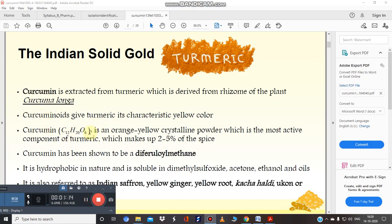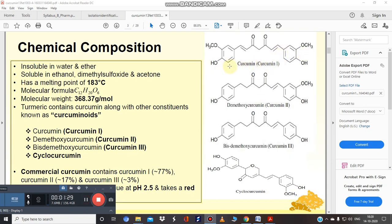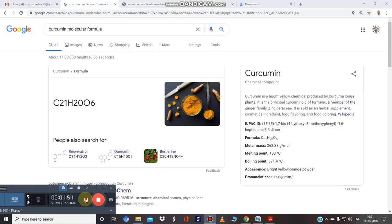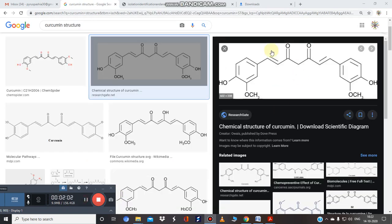Curcumin is the main chemical constituent present in turmeric and it is an orange yellow crystalline powder. See the structure of curcumin, along with its related derivatives like demethoxy curcumin (curcumin II) and bisdemethoxy curcumin (curcumin III). The molecular formula is C21H20O6.